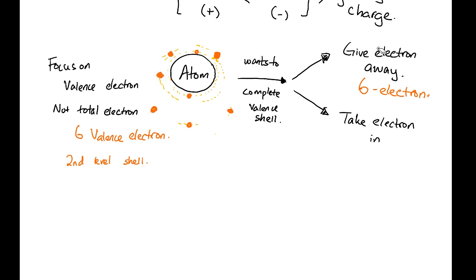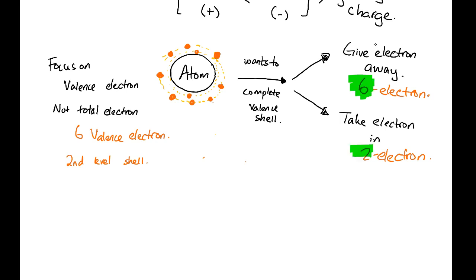For the second-level shell, it has a maximum capacity of eight. So this atom can take in two more electrons into the valence shell, giving it eight total. So this atom can take in two electrons to complete the valence shell. You have two options: give six away or take two in.